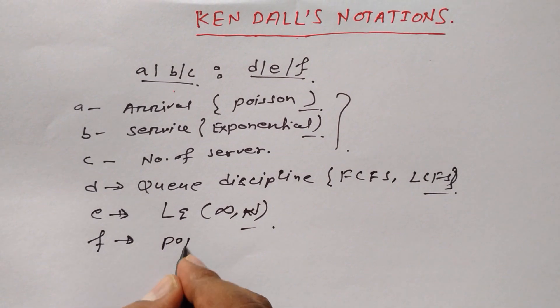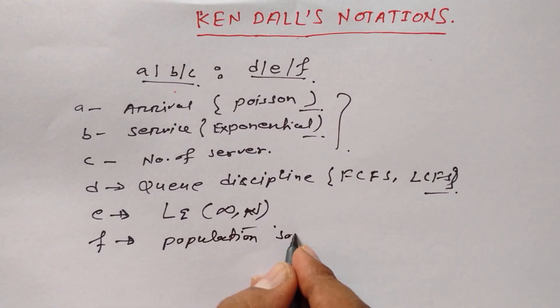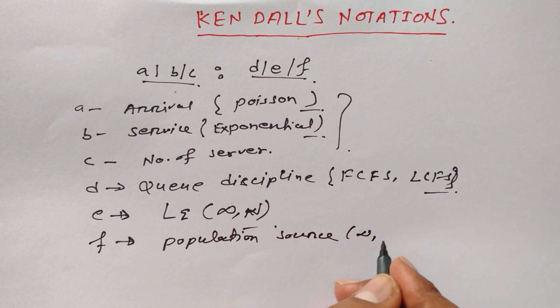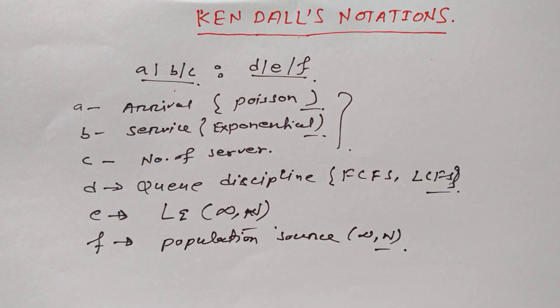Now the last, F: that is population source. This could be infinity as well as N. So it's all about the Kendall's notation.